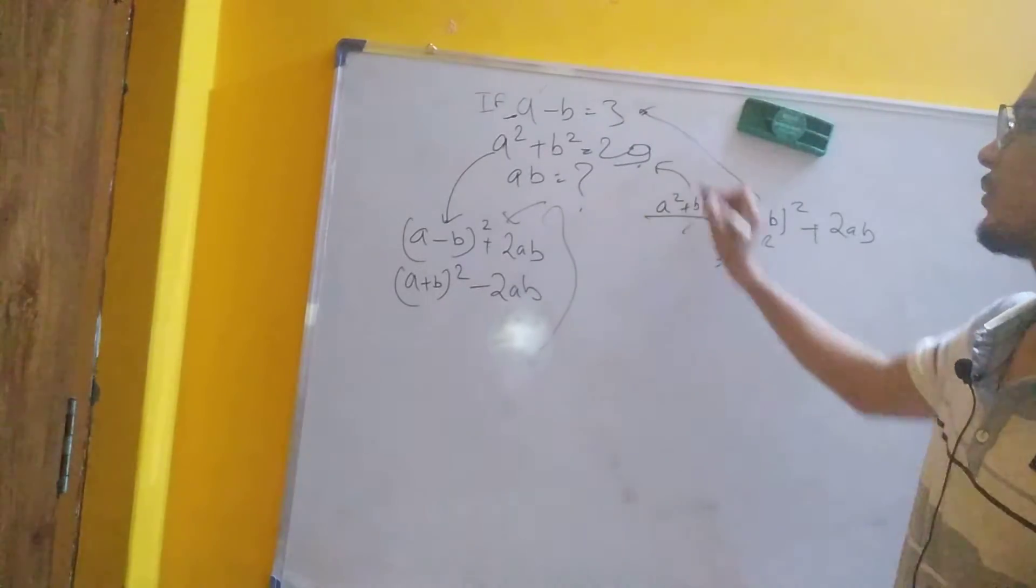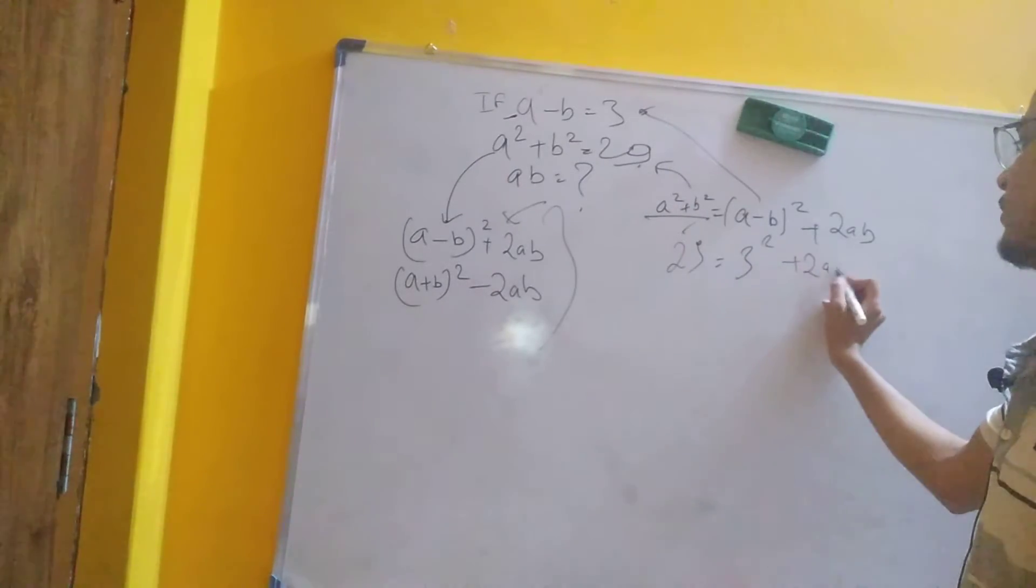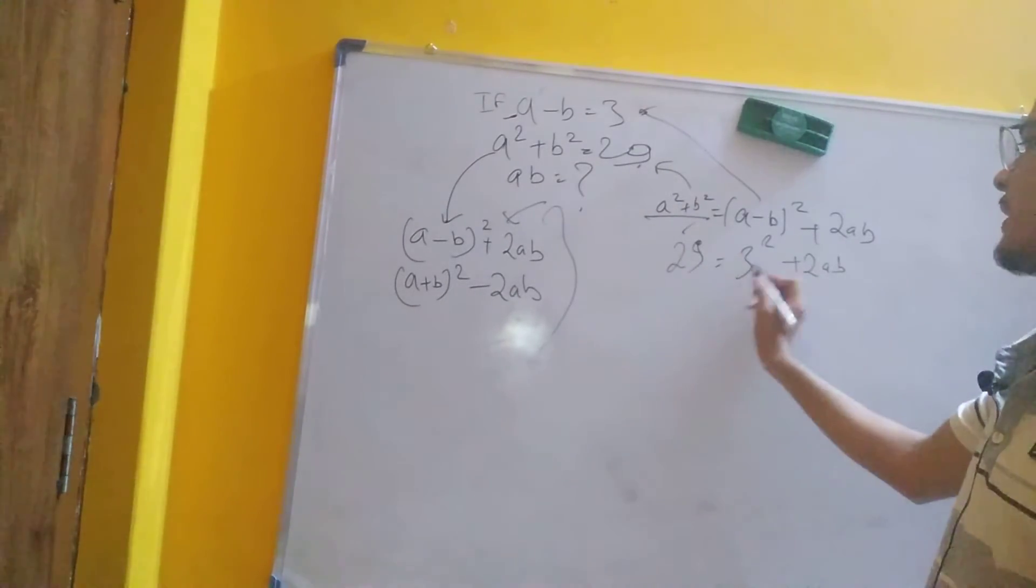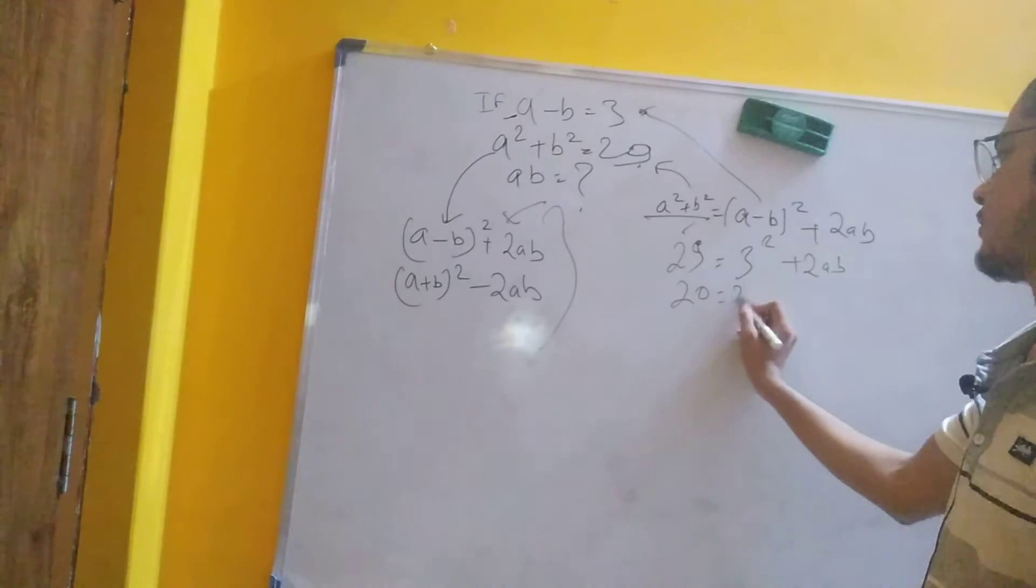So we have 29 minus 9 equals 20, which equals 2ab. Therefore, 20 divided by 2 gives us ab equals 10. Namaskar.